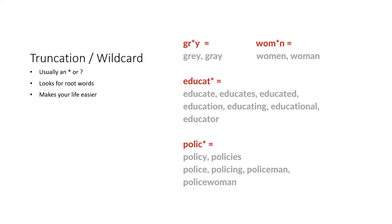Most databases will allow you to use an asterisk as a wildcard, which allows you to search for a root word and all of its different endings. For instance, using EDUCAT* will search for educate, educates, educated, education, educating, educational, and educator. However, you have to be careful — sometimes you can find unrelated words that share the same root. If you type POLIC* to search for policy or policies, you will also find police or policing. So when using truncation, make sure you're getting as much of the root word as possible. You can also use the asterisk as a wildcard within a word — entering WOM*N will search for both woman and women. Most databases use an asterisk for this; some use a question mark. Check the database's help page to see which symbol they use.